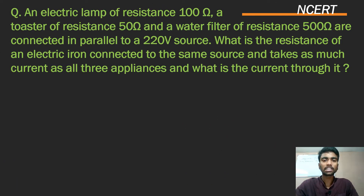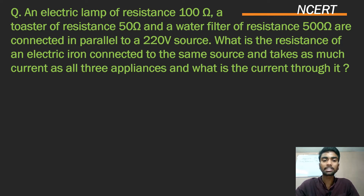Hi, this is Aman. The question says that an electric lamp of resistance 100 ohm, a toaster of resistance 50 ohm, and a water filter of resistance 500 ohm are connected in parallel to a 220 volt source. What is the resistance of an electric iron connected to the same source that takes as much current as all three appliances, and what is the current through it?